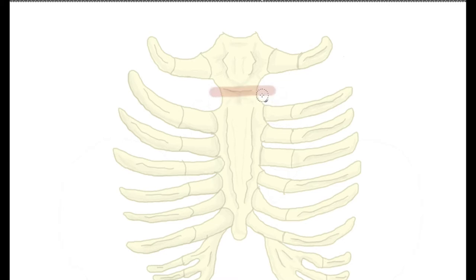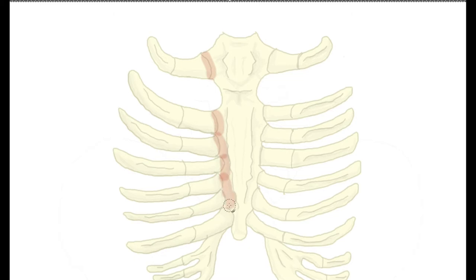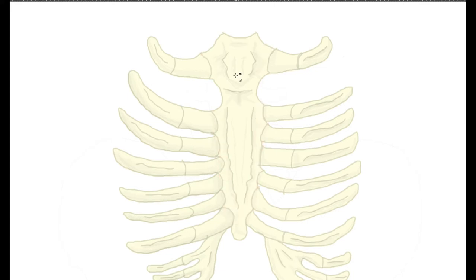If you look at the sternum from a lateral view, you can see it has a slight drop — a little angle as it comes down — and that's the sternal angle. Then we see little indentations along the sides called the costal facets. These are just spaces where the costal cartilage meets the sternum. The last landmark of the sternum is the little bottom appendage called the xiphoid process.